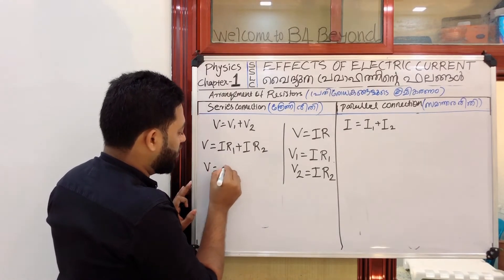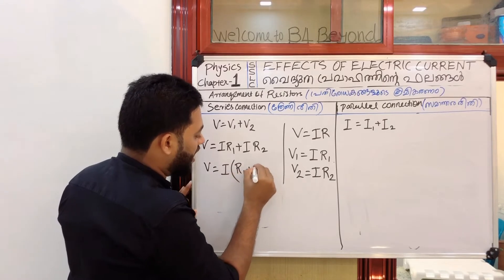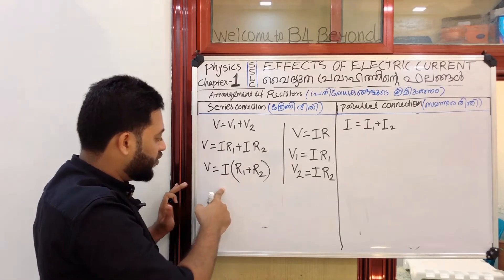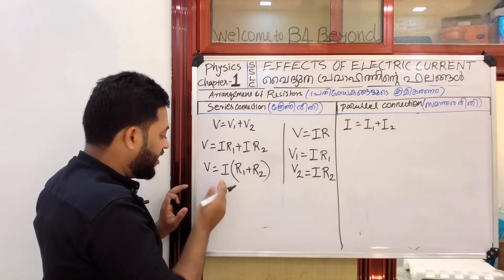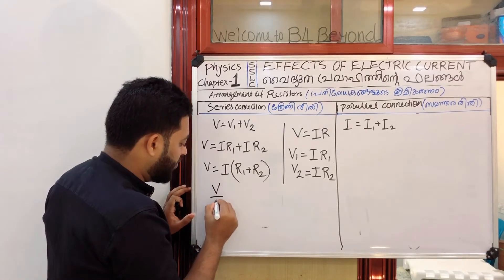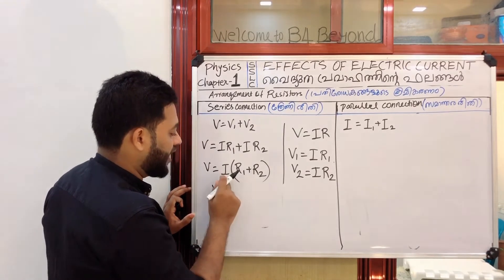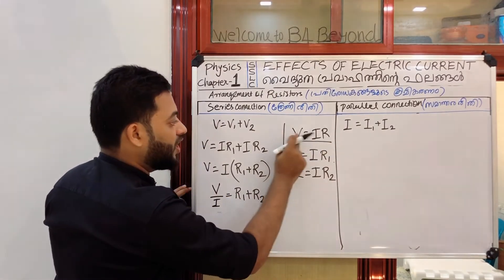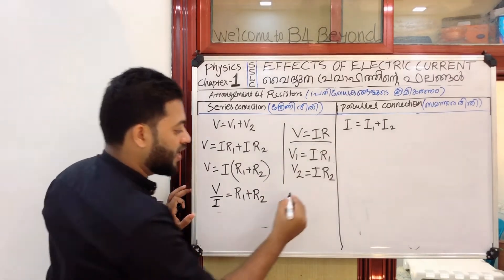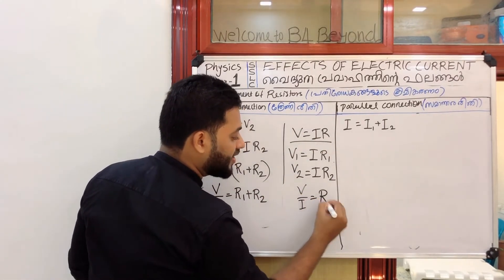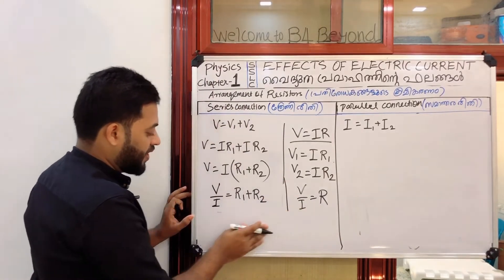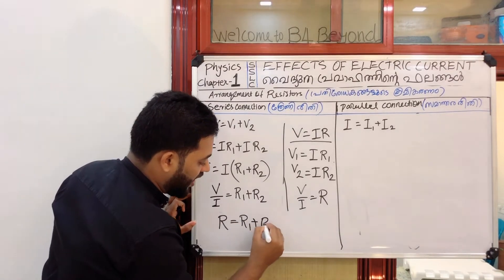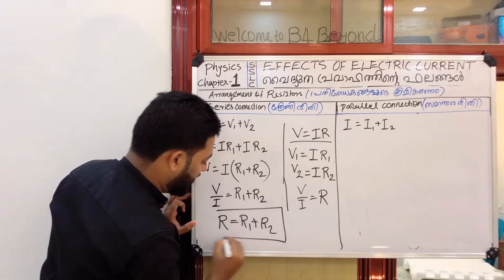That is V equals I into R1 plus R2. Taking I as common, V by I equals R1 plus R2. The equation is V/I = R1 + R2, which gives the effective resistance for a series connection. So the equation is V/I = R effective.